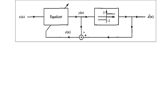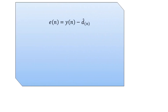In the decision-directed method, x(n) from the non-ideal communication channel is fed as input to the adaptive channel equalizer, which generates output y(n). From y(n) and knowledge of d(n), the error signal e(n) is generated. A decision-making block then produces d-hat(n). If there is no error at the output of the threshold device, d-hat(n) equals d(n), and the error sequence is formed as e(n) = y(n) − d-hat(n). This is why the approach is called the decision-directed method.